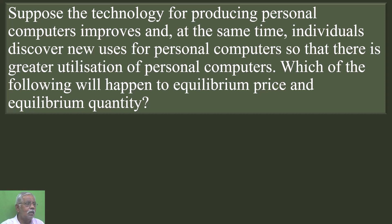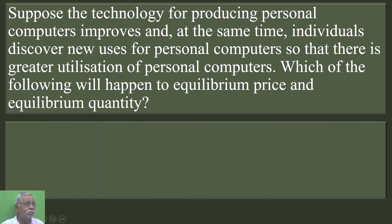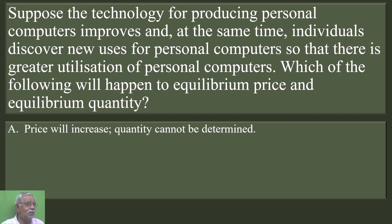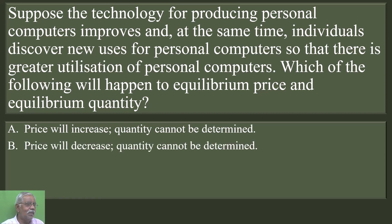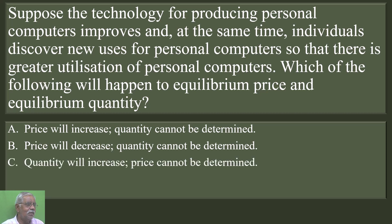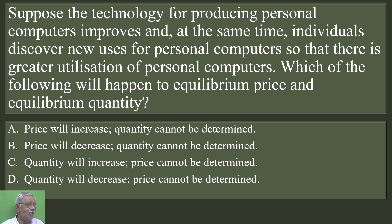The options. Price will increase, quantity cannot be determined. Price will decrease, quantity cannot be determined. Quantity will increase, price cannot be determined. Quantity will decrease, price cannot be determined.